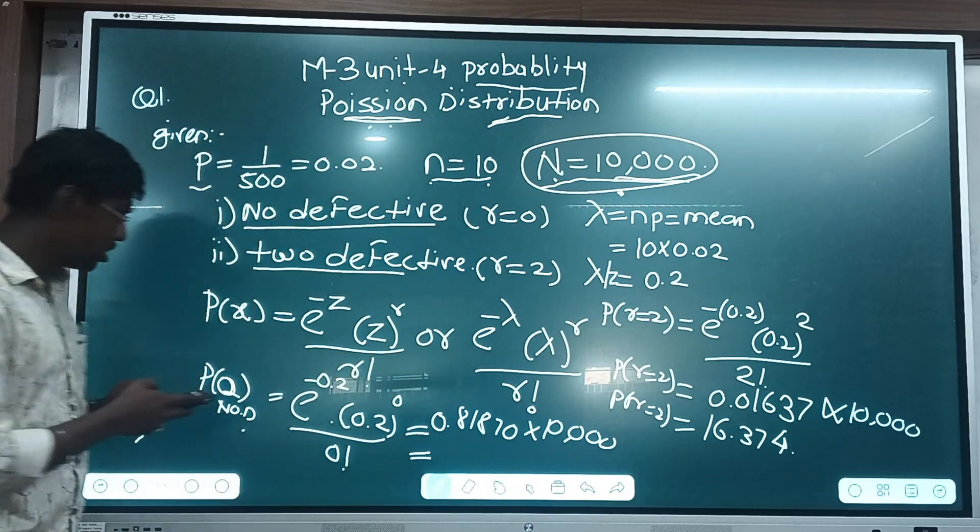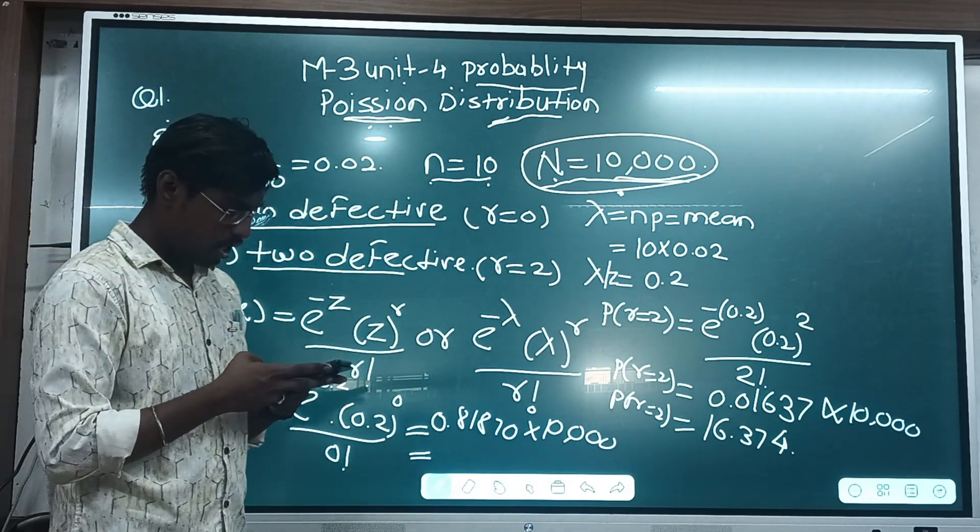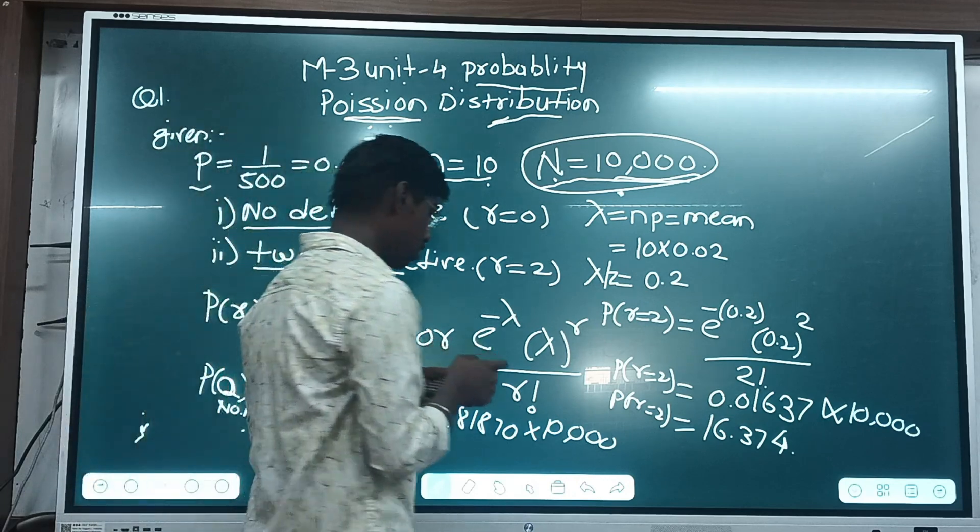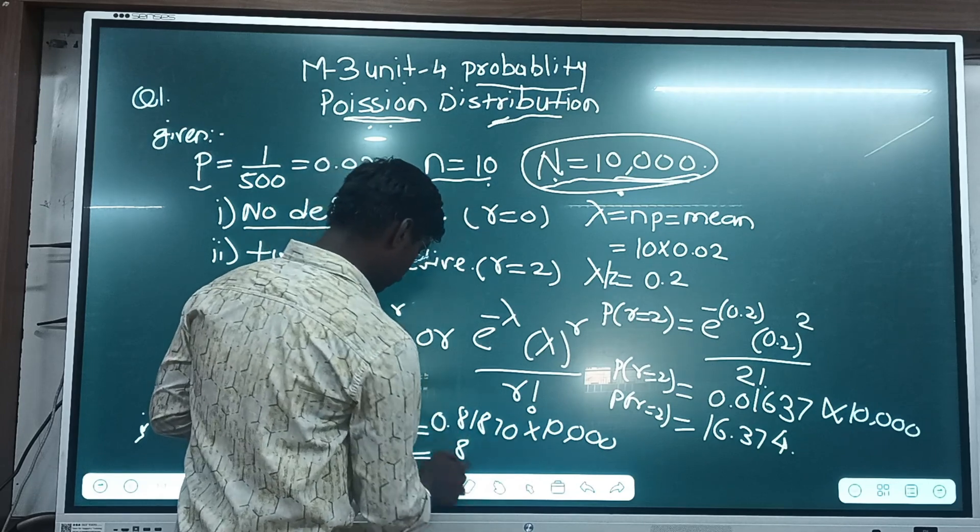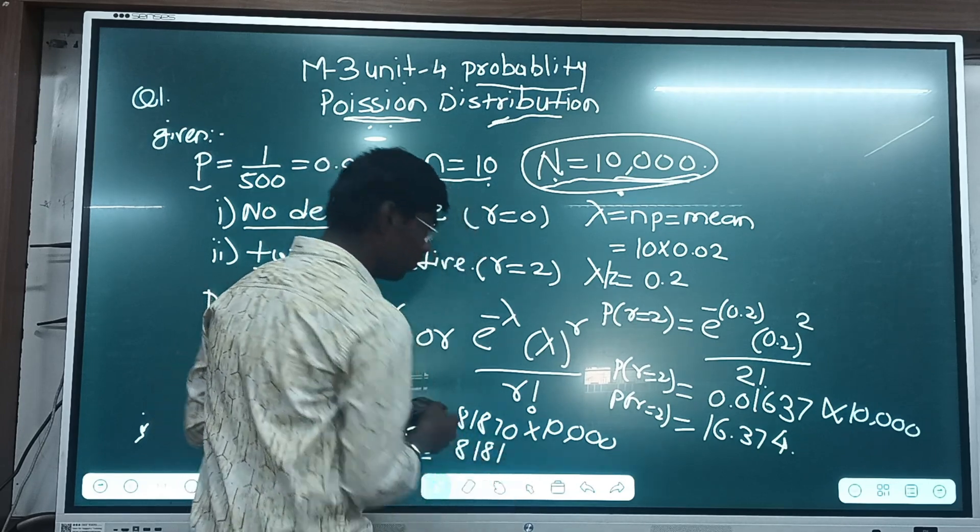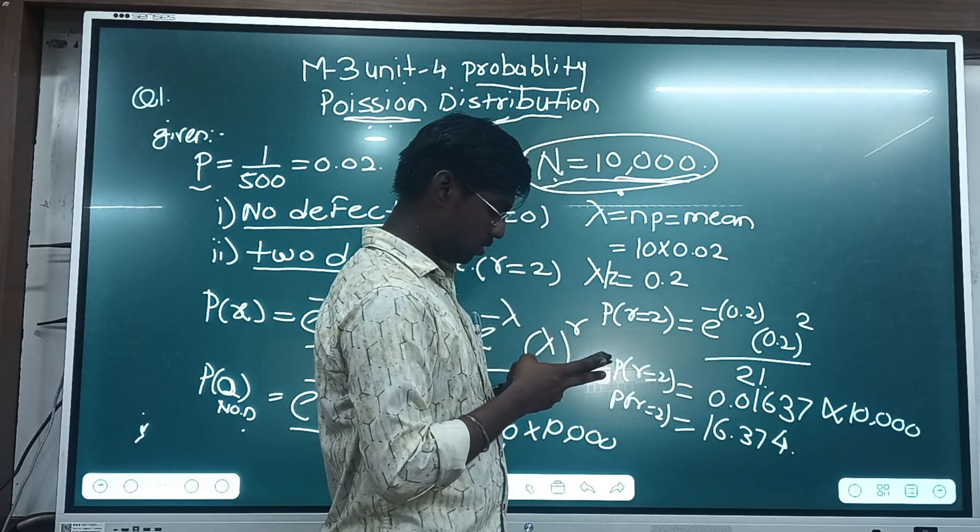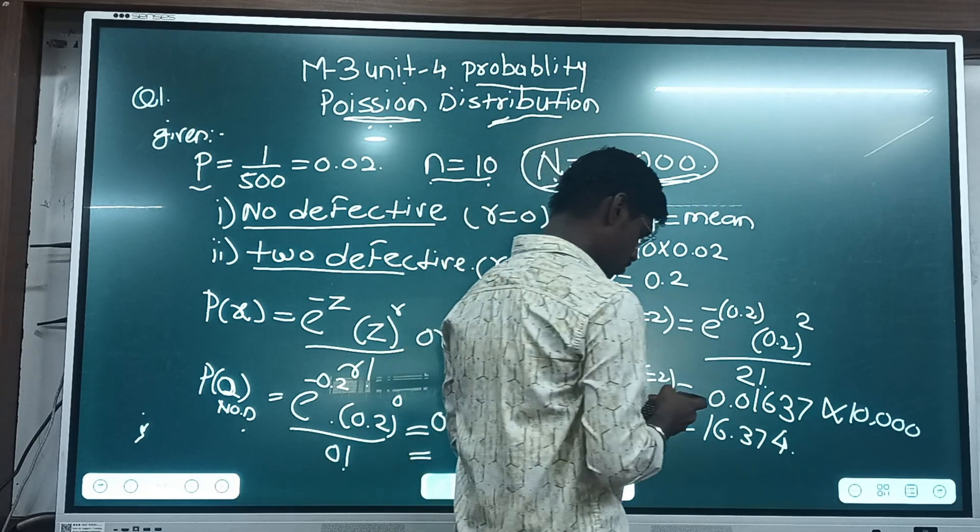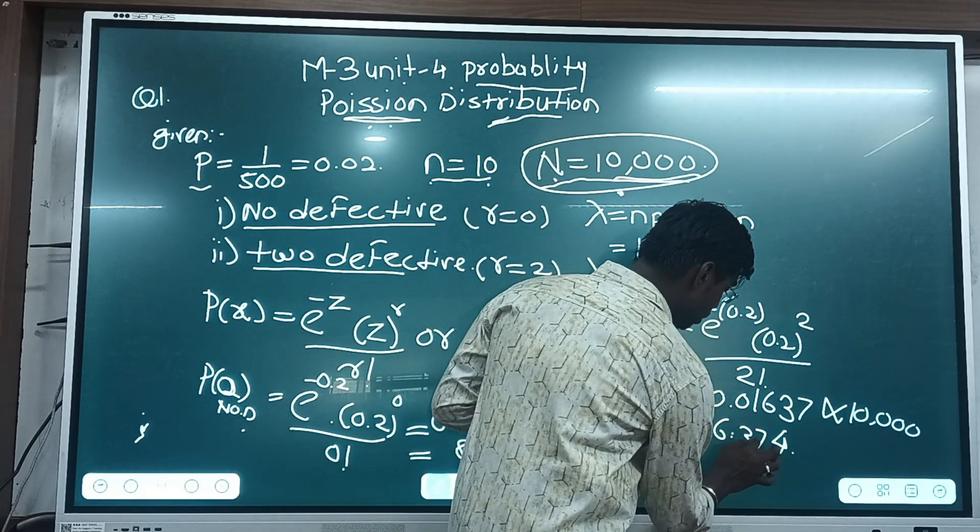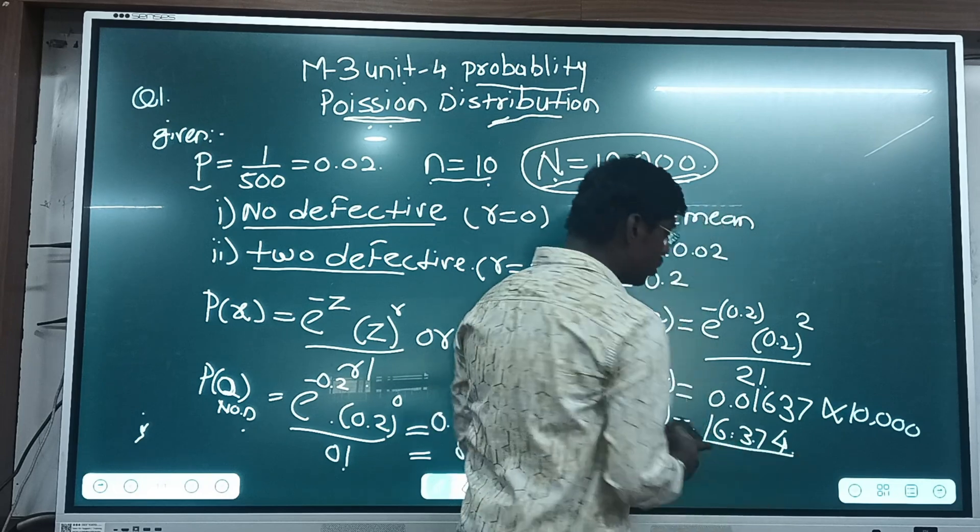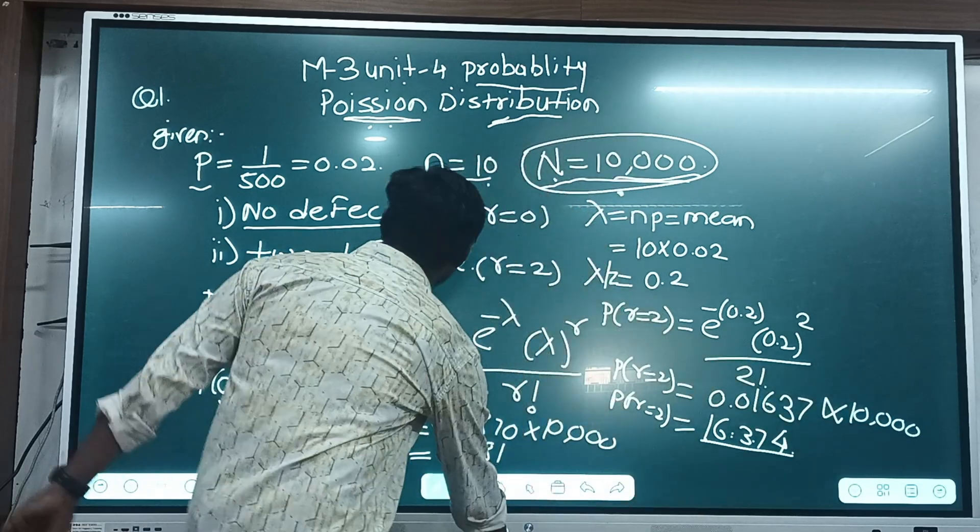And this will be 0.81870 into 10,000. So this is 8187. Some small mistake, it is 163.74 after multiplying by 10,000.